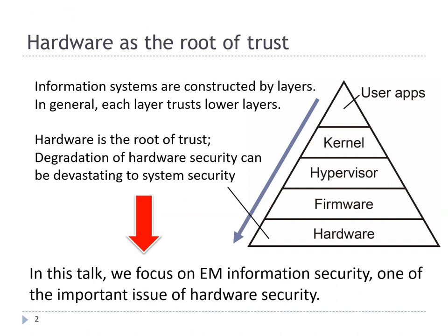First, I'd like to introduce the background of this talk. This figure shows the trust model inside an information system — specifically, the structure of layers in a general information system. The system works through interaction of these layers, and each layer trusts the layers below it. So in this structure, hardware is the root of trust. If hardware security degrades, it can be devastating to system security. Hardware security is therefore important to protect information systems against malicious attackers.